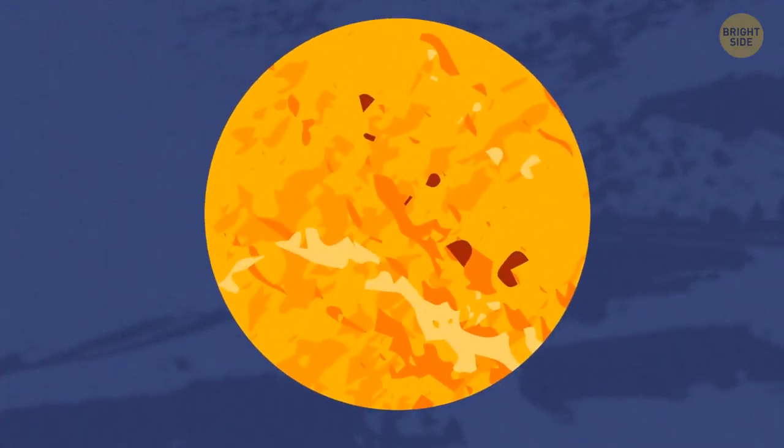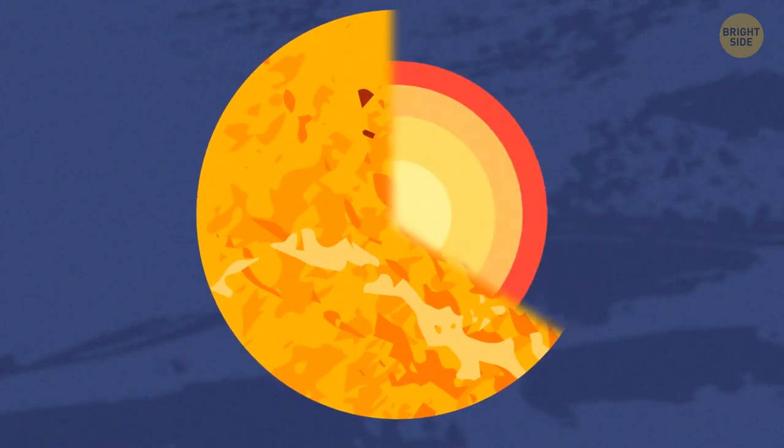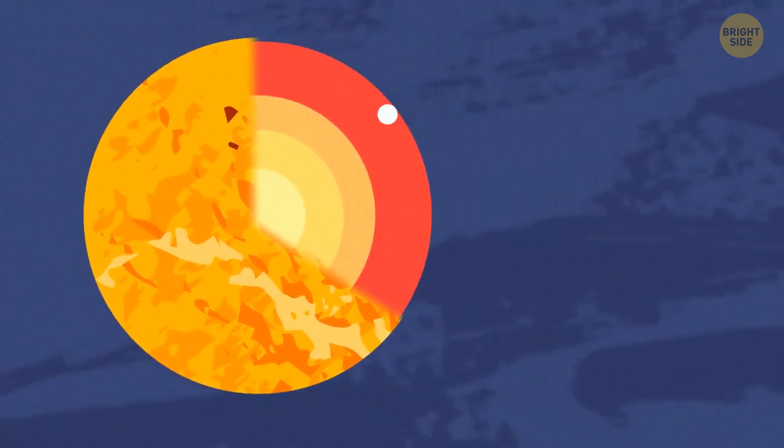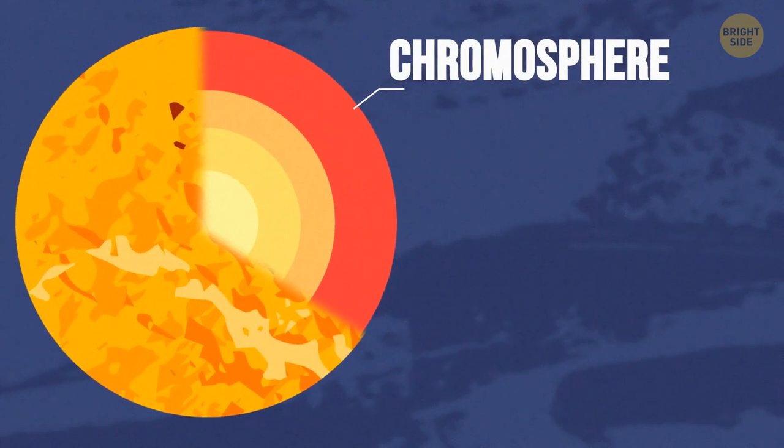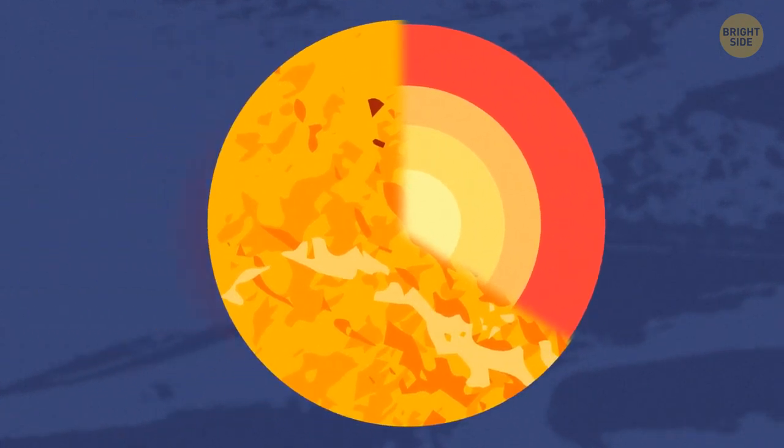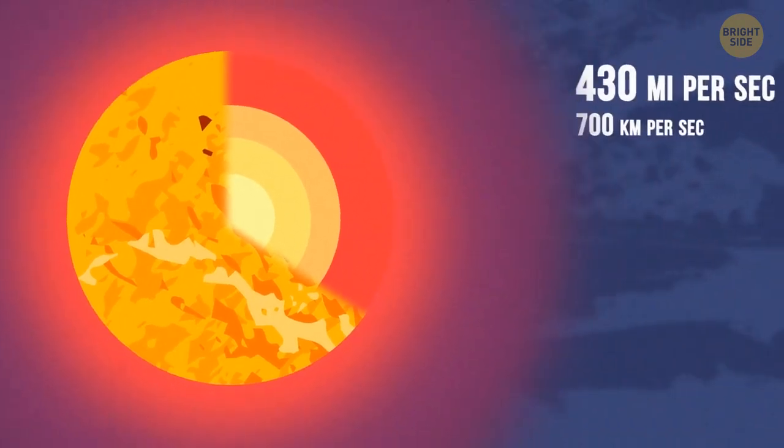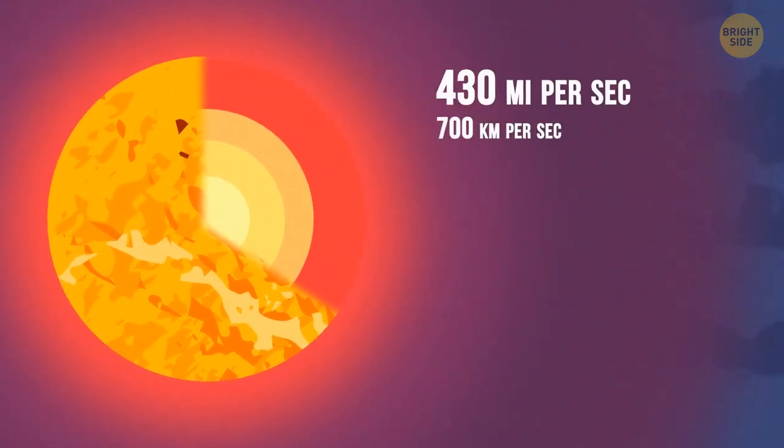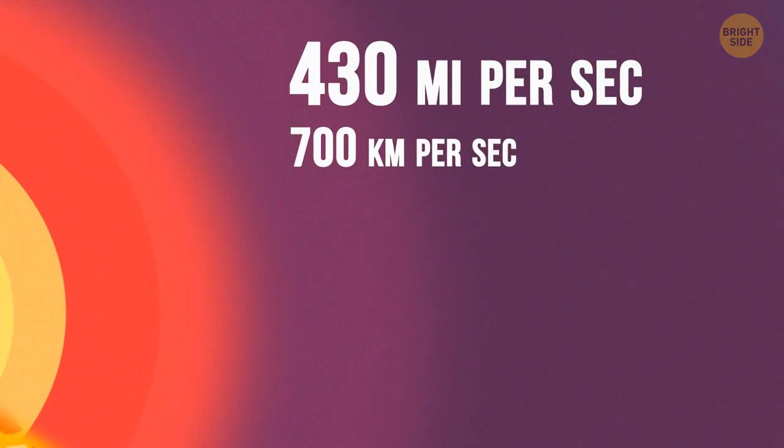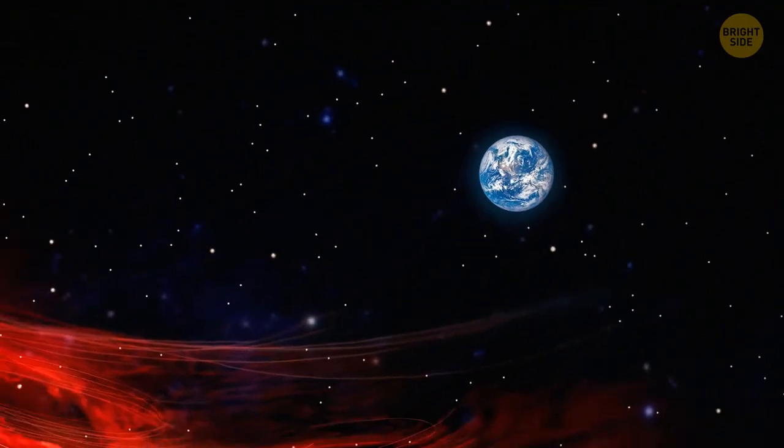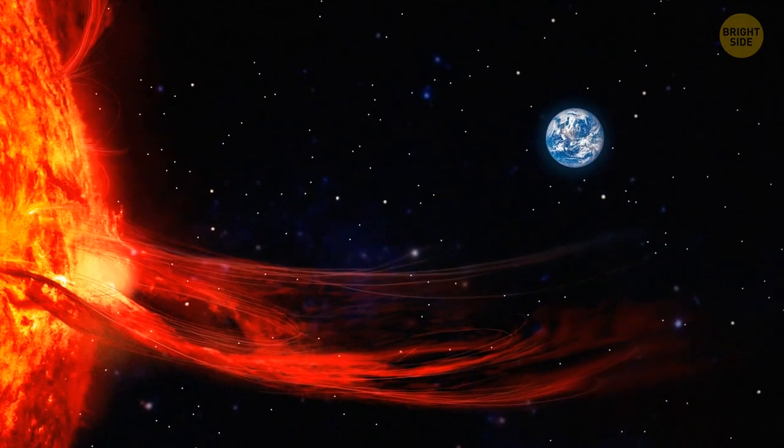Then, the chromosphere, or the sphere of color. This layer of the sun's atmosphere gives the star its reddish hue. Solar prominences appear here. Those are powerful emissions of matter, leaving the surface of the sun. Their speed can reach 430 miles per second. At some point, they get caught by the star's magnetic field and pulled back.